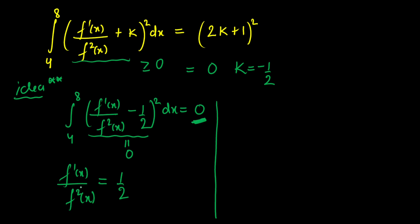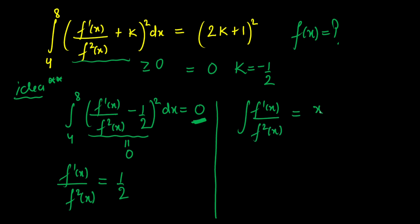Our main objective is to calculate f(x), so we integrate both sides. Integrating f'(x)/f(x)² = 1/2 is straightforward since both the derivative and function are available. The left side integrates to −1/f(x), and the right side gives x/2 + c.